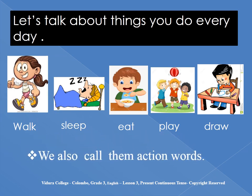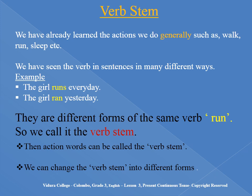We also call them action words. We have already learned the actions we do generally, such as walk, run, sleep, etc. We have seen the verb in sentences in many different ways. For example, 'The girl runs every day.' 'The girl ran yesterday.' These are different forms of the same verb 'run.' So we call it the verb stem. The action word can be called the verb stem — we can change the verb stem into different forms.